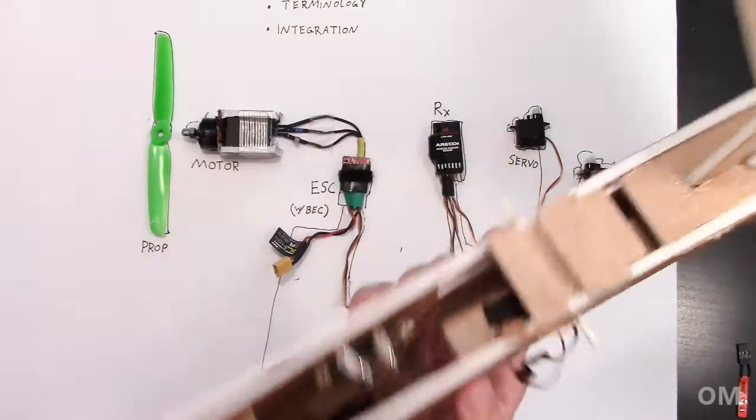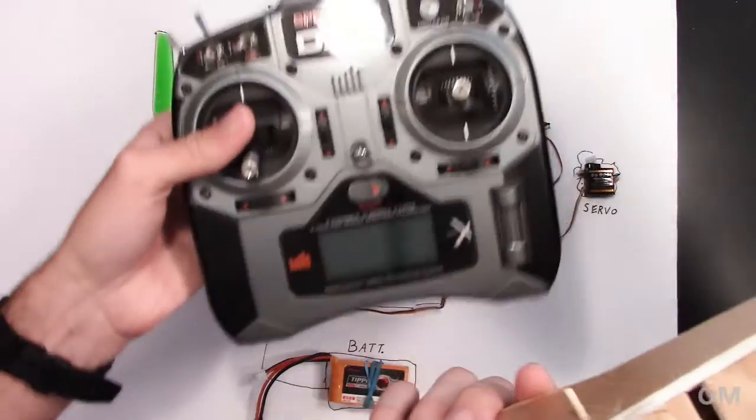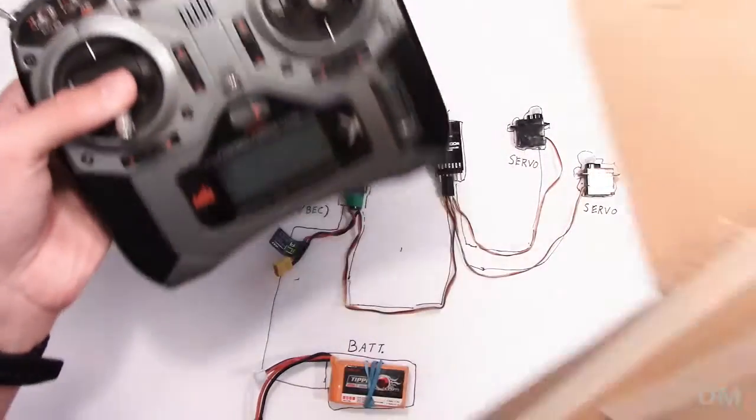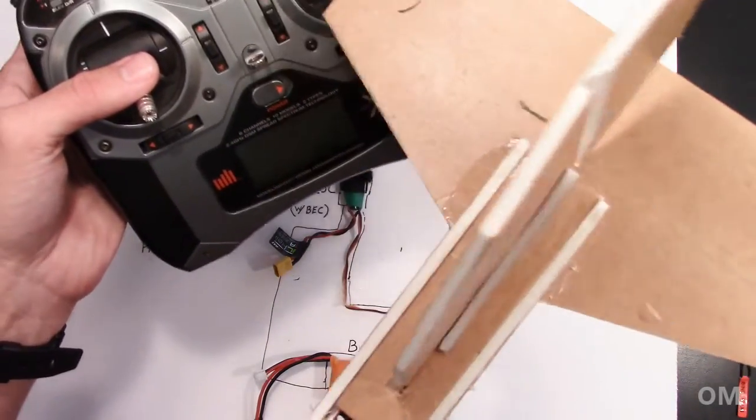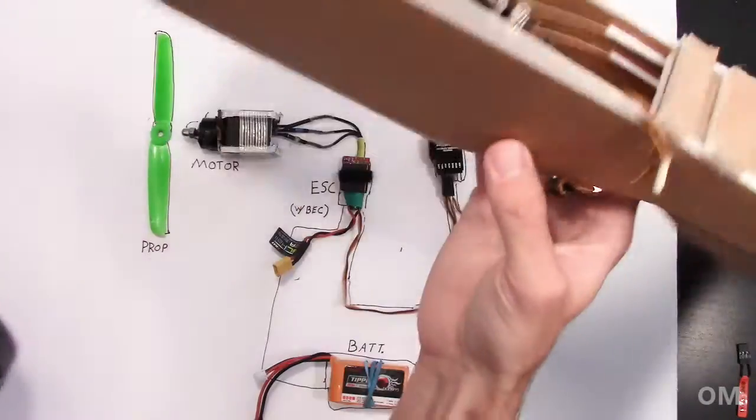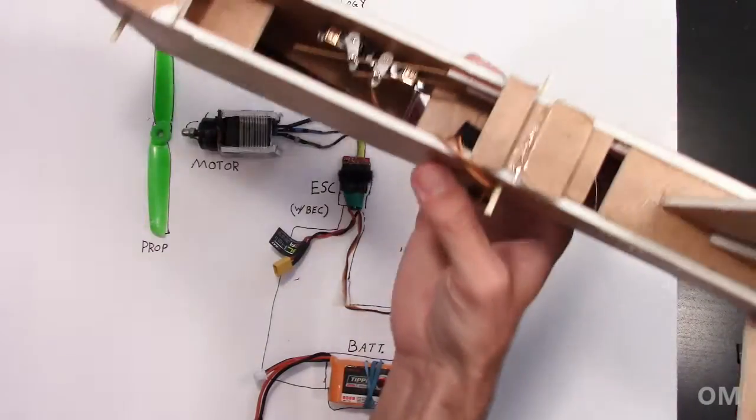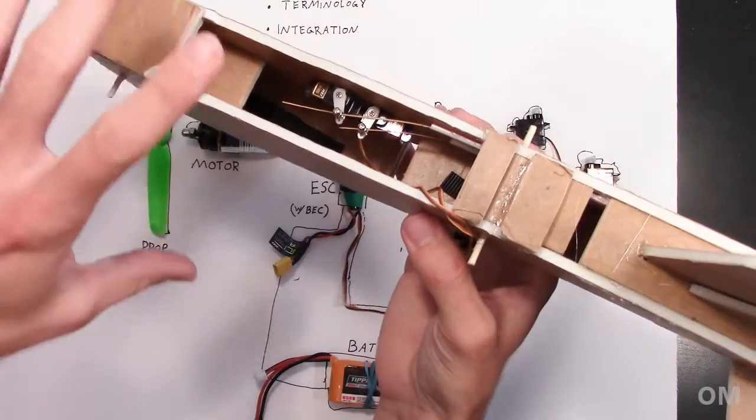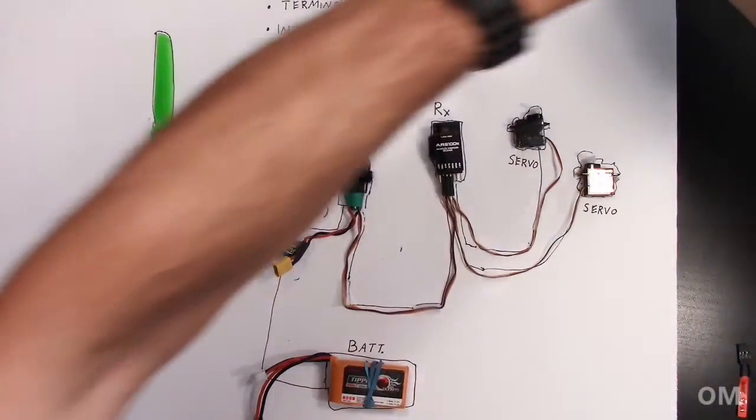So in order to do that, and then we also need to control all of that with our transmitter here. So we need to get our stick inputs on here, these sticks here. We need to get that so that they talk to the airplane and make it do what we want it to do. That's the basic premise of it.